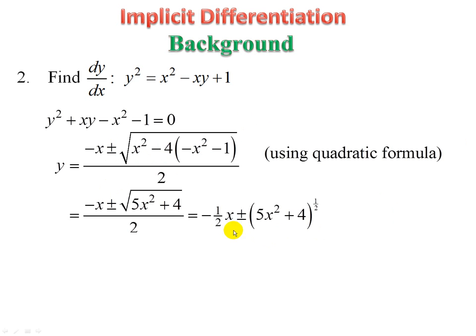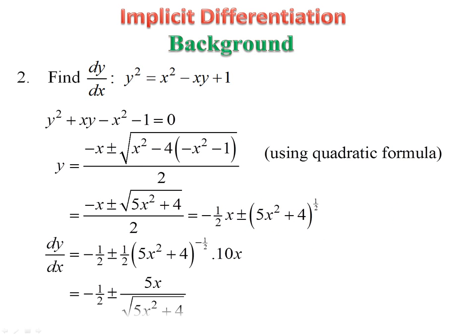To differentiate two terms: differentiate the first term, differentiate the second term. So the derivative of minus half x minus a half, plus or minus, differentiate that by chain rule: half bracket to the minus half, times derivative of the inside, which is 10x. Get rid of the negative exponent by writing this in the denominator, and we end up with the square root of 5x squared plus 4. We can write that as 5x squared plus 4, all to the half as well.